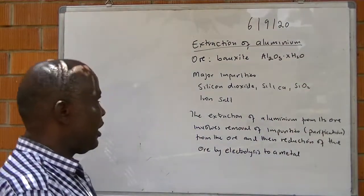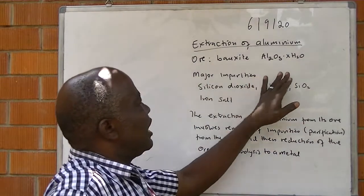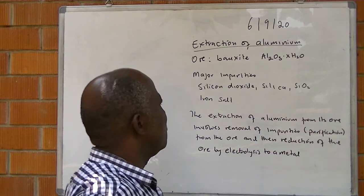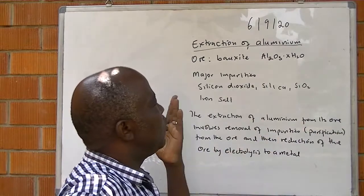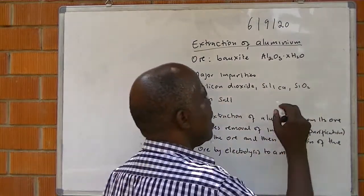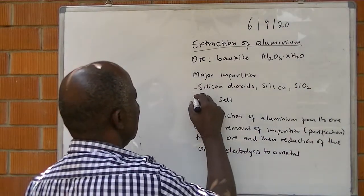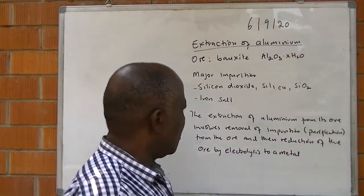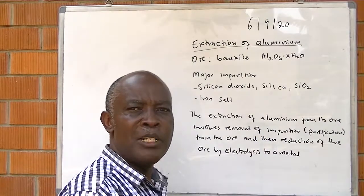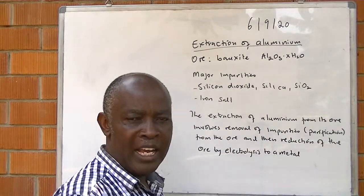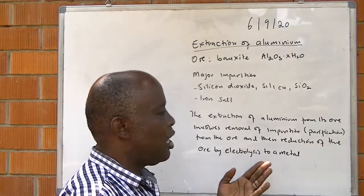Extraction of Aluminium: the ore is called Bauxite, or Aluminium Oxide, with a variable amount of water. The major impurities are silicon dioxide, or silica, and iron oxide. The principle in extraction of Aluminium involves removal of impurities from the ore, and then reducing the ore by electrolysis to a metal.